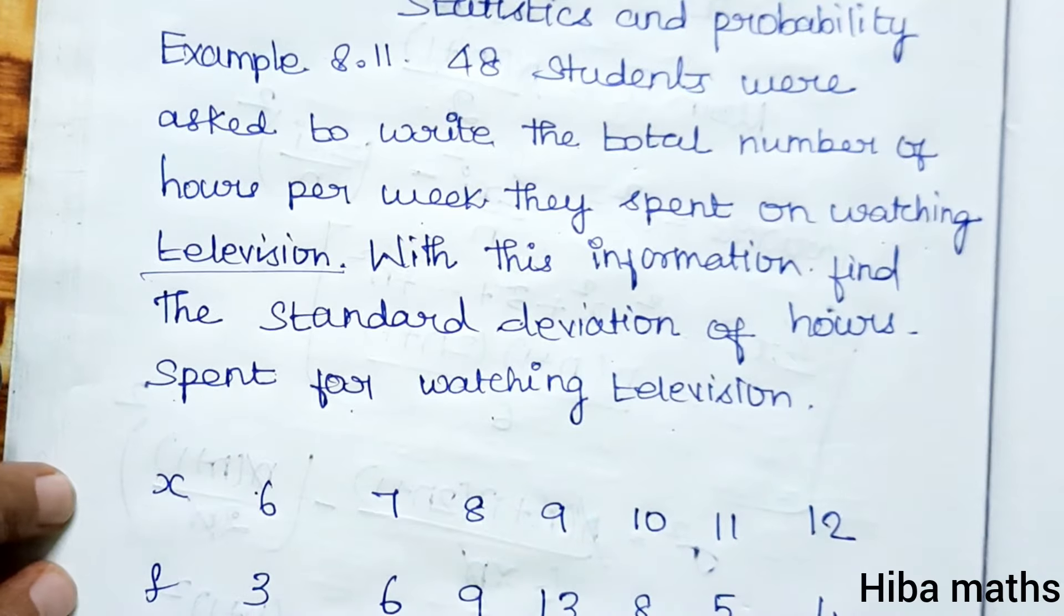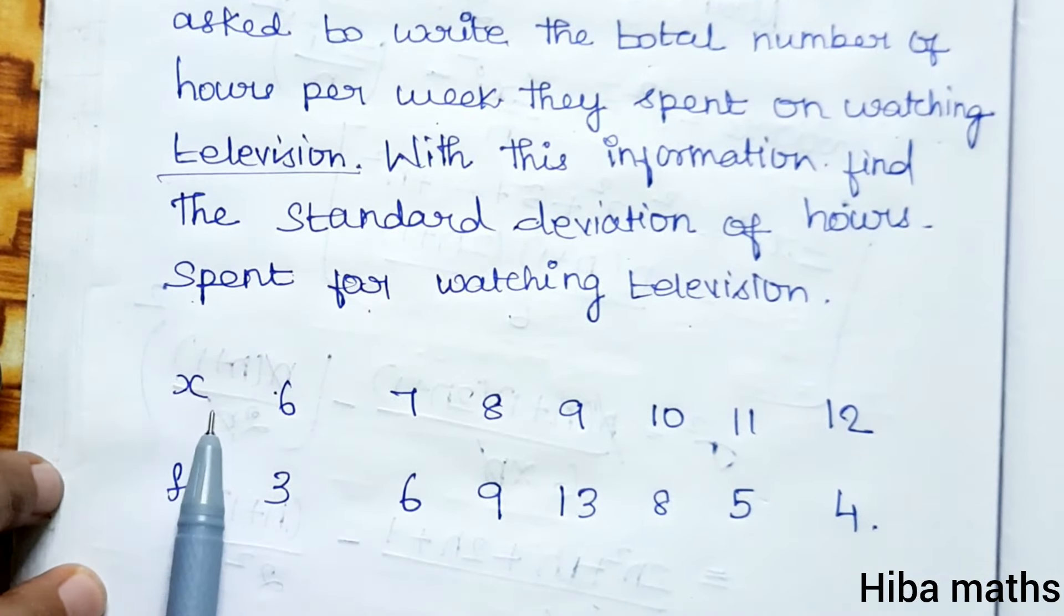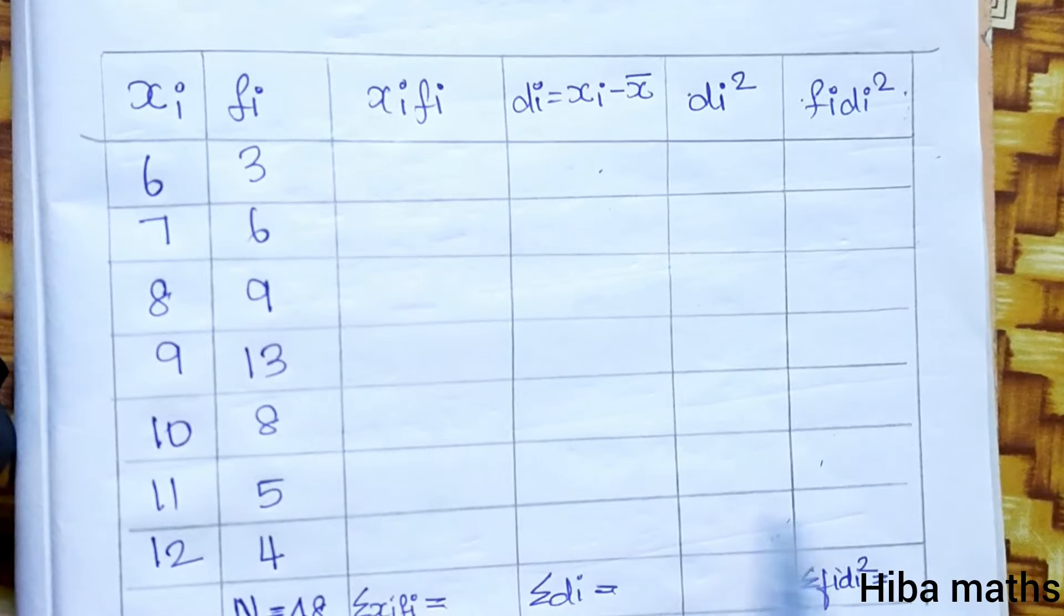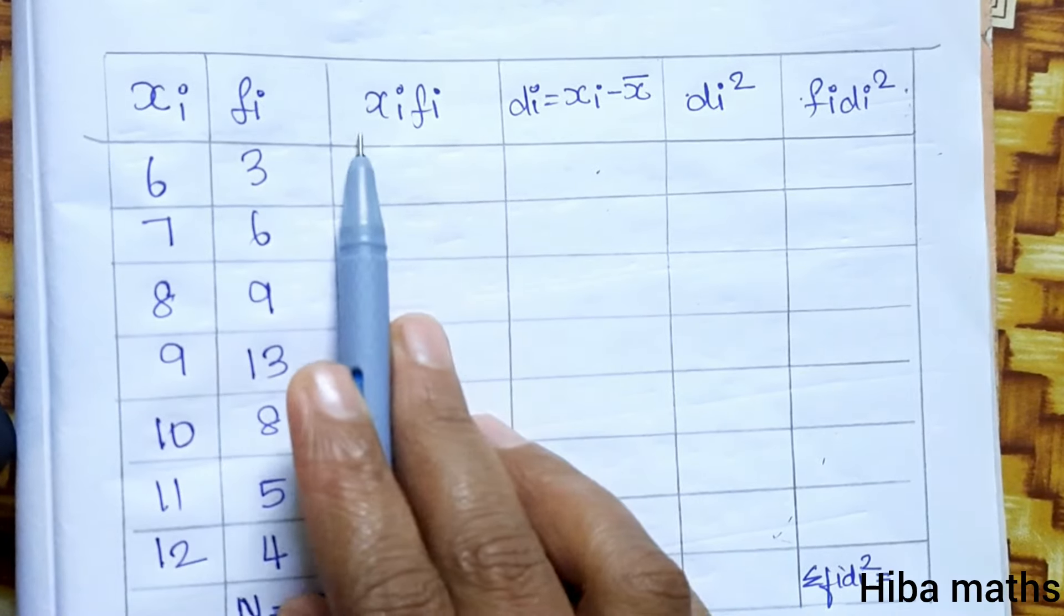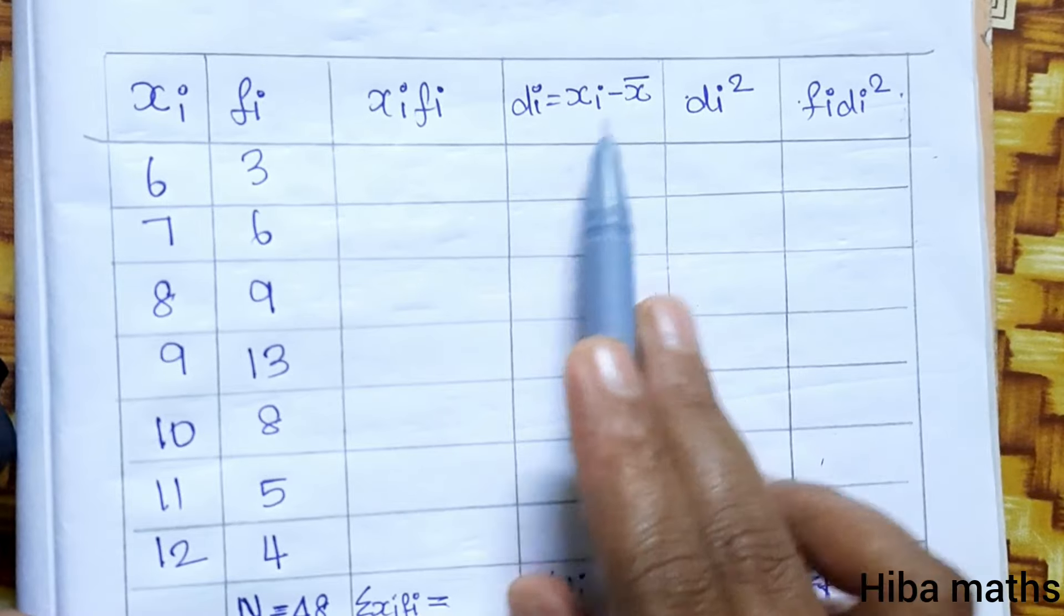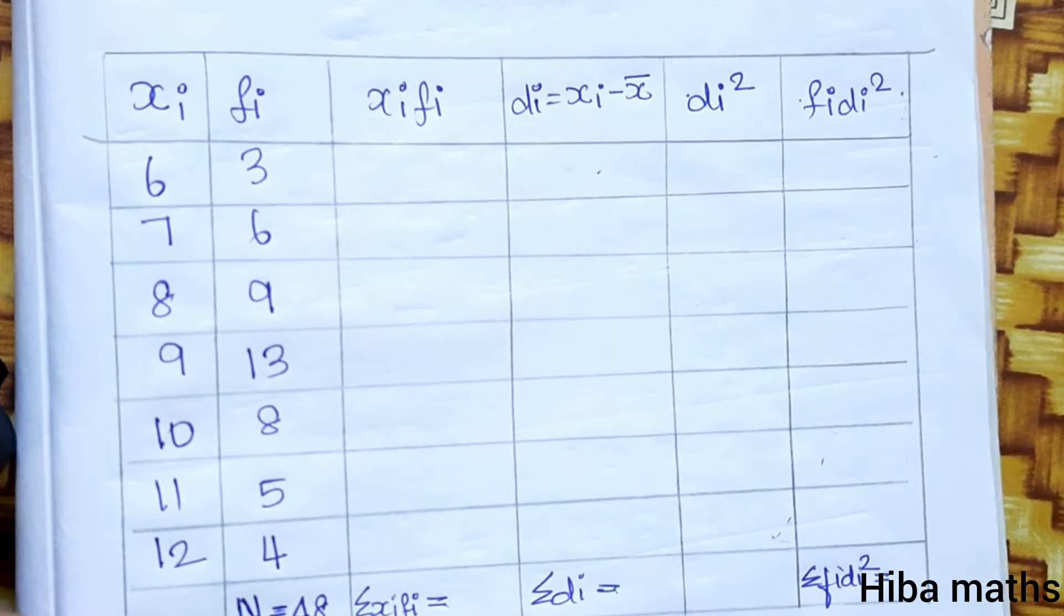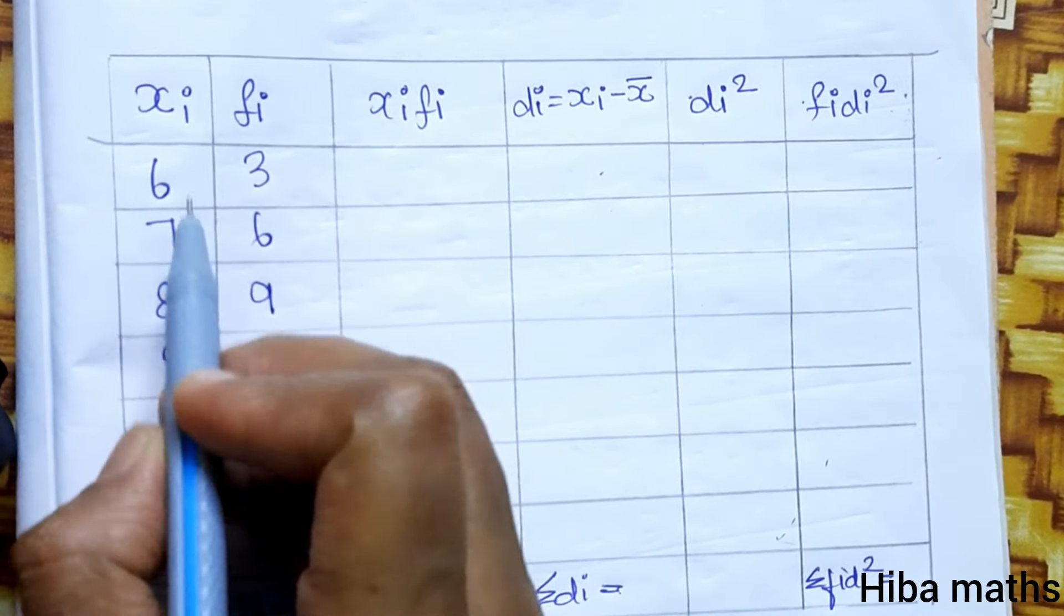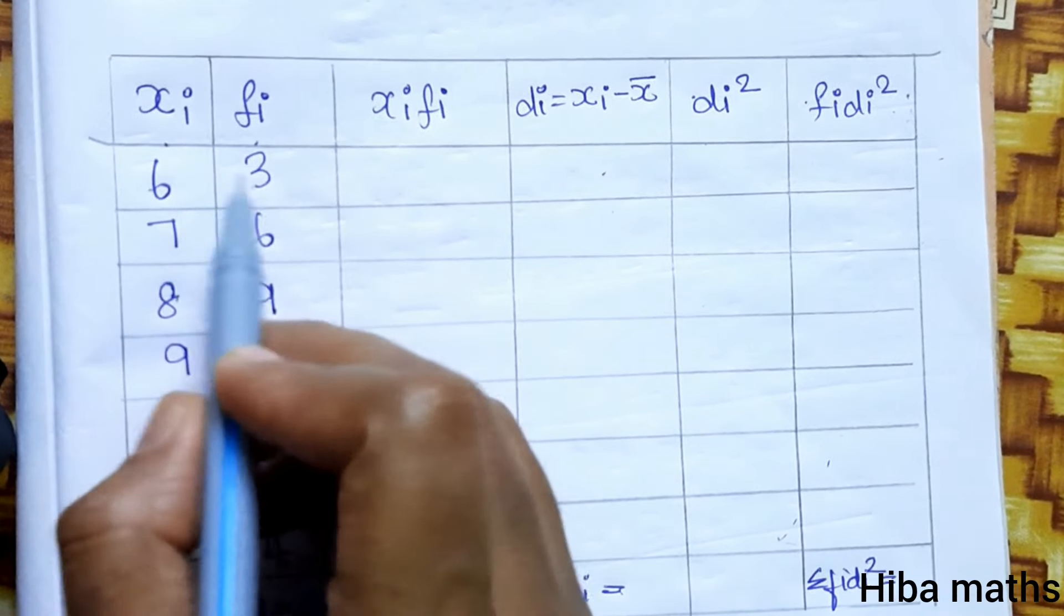To find the standard deviation, we will create a table with columns: xi, fi, xi*fi, di where di equals xi minus the mean, then di square, and fi into di square. This is xi, this is fi, we will multiply and take the answer.